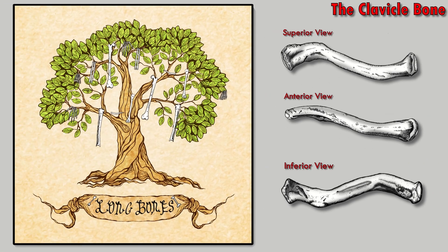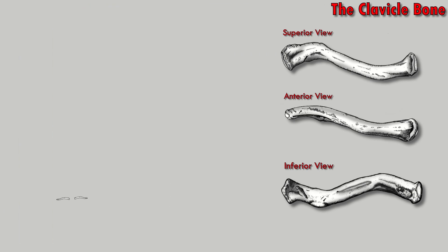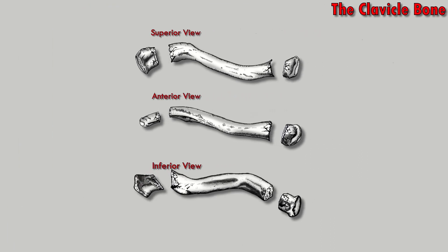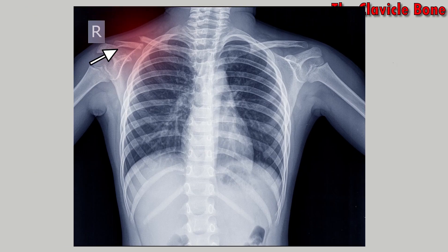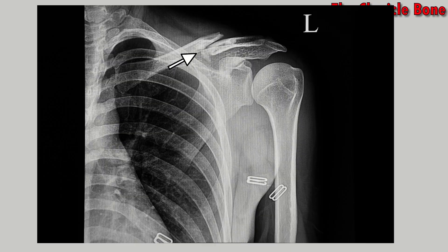The clavicle bone is also known as the collarbone. It's in the family of long bones; however, it's the only long bone that lays horizontal on the human body — every other long bone is vertical. The clavicle bone can be broken up into three sections. You have to be careful with these clavicle bones — they tend to break. In fact, it's the most commonly broken bone in the human body.